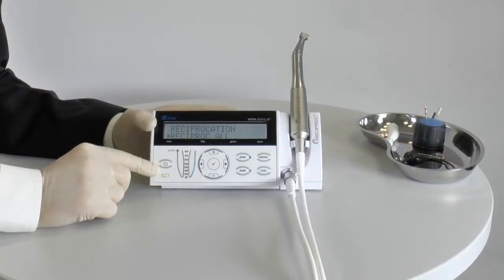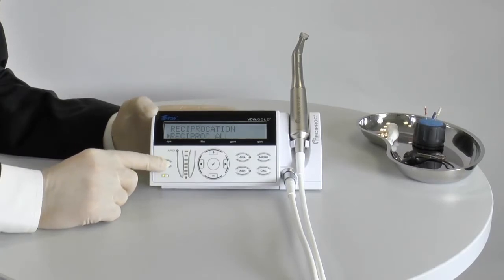To start your VDW Gold Reciproc press the power key. You can find this key above the battery icon. When the battery symbol lights green, the motor is ready for use.